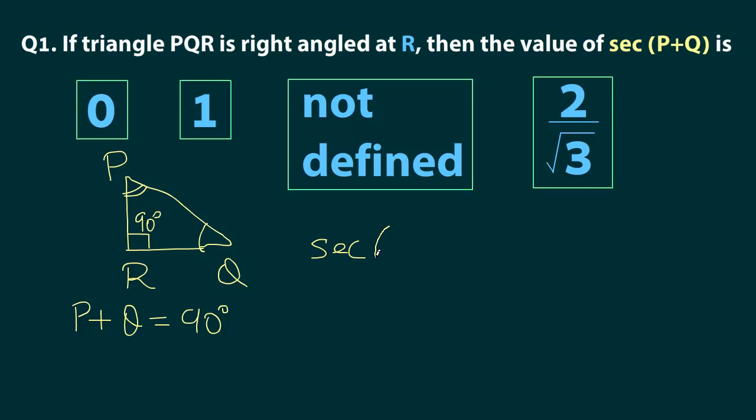Now we are trying to find out the value of sec(P+Q). We know that sec of any angle is simply 1 by cos of that angle. And this angle is actually 90 degrees. So essentially we have to find out 1 by cos 90. Now cos 90 we know is 0. So we have 1 divided by 0. Anything by 0 is undefined. So that is our answer.